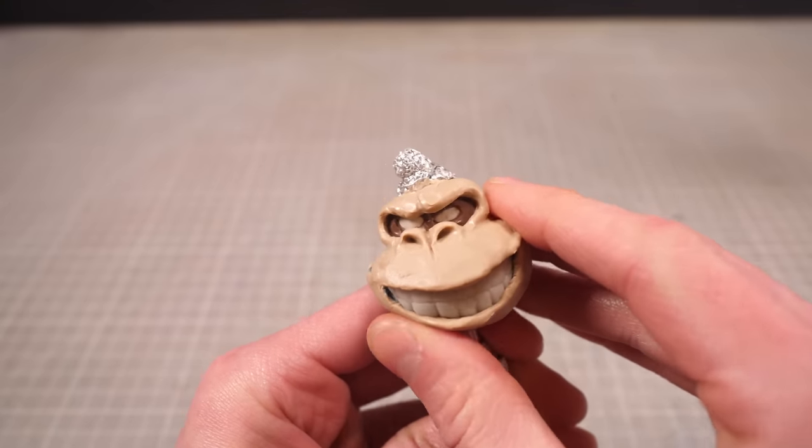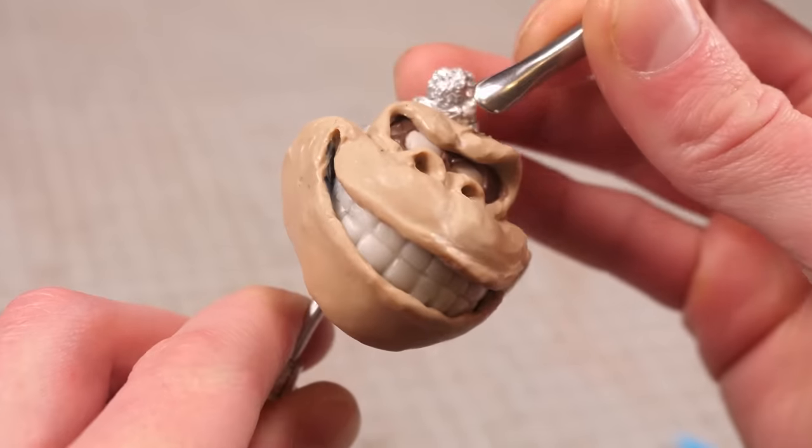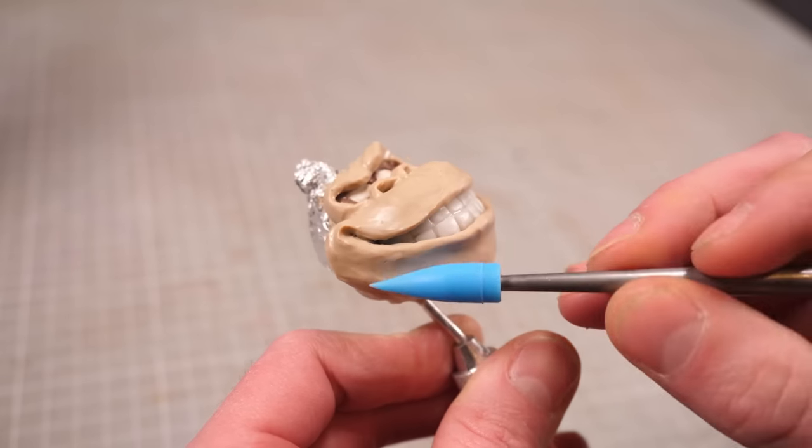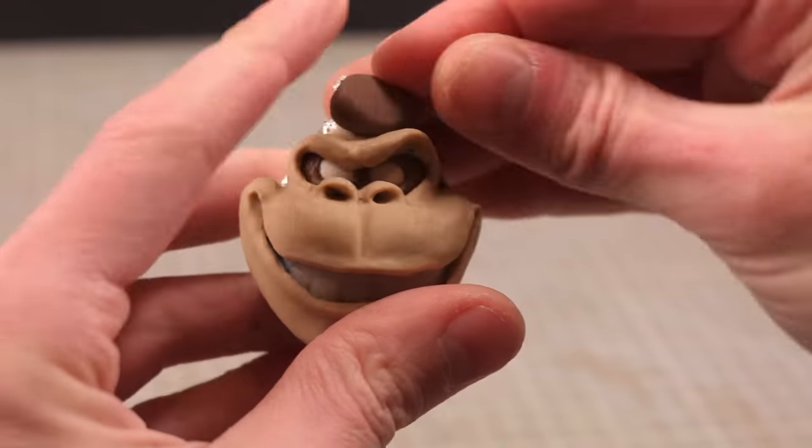I've never made Donkey Kong before, so it took me a while to figure out the shape of his head, but once I got the teeth in place and built up his cheeks a little bit, I was content enough to bake it all to save my progress so I could get on to adding the brown fur around the rest of his head.